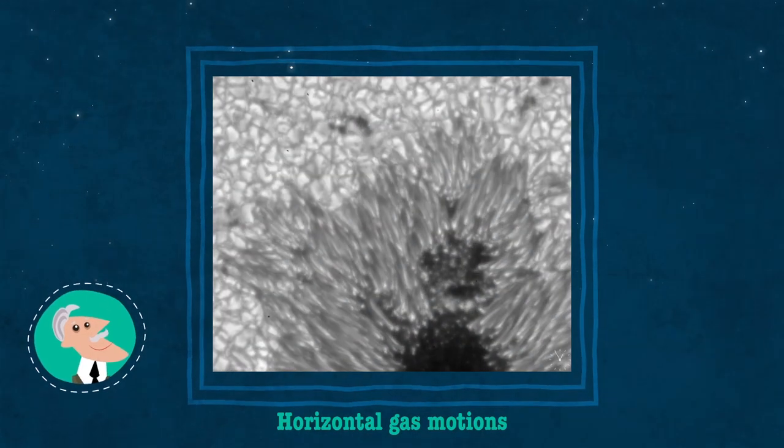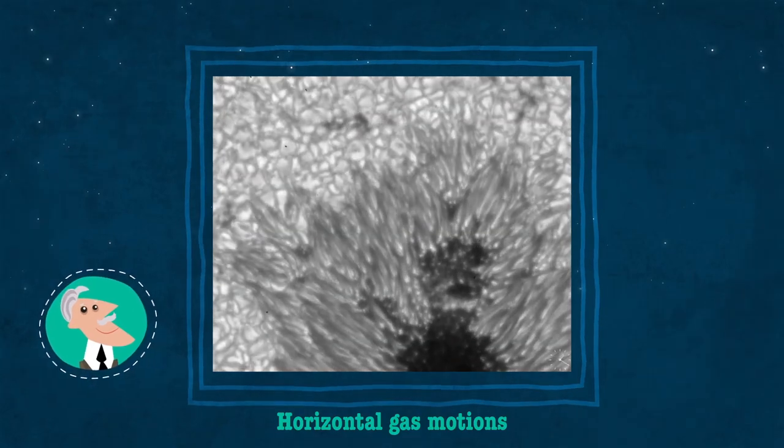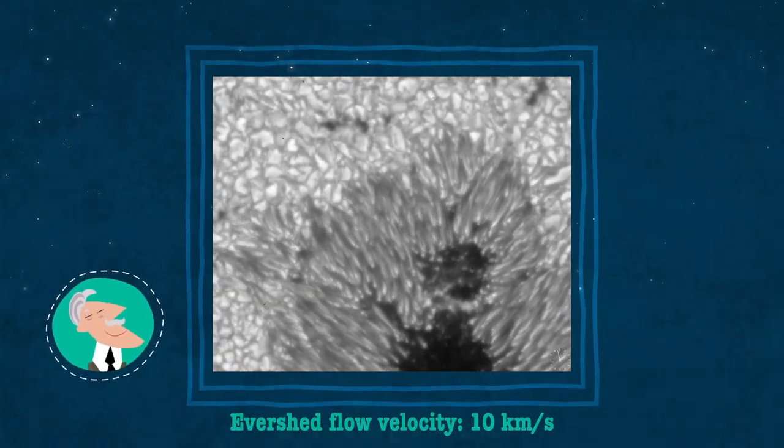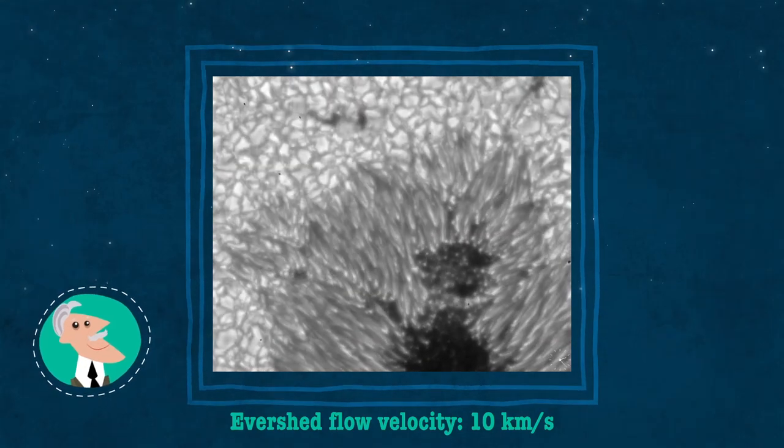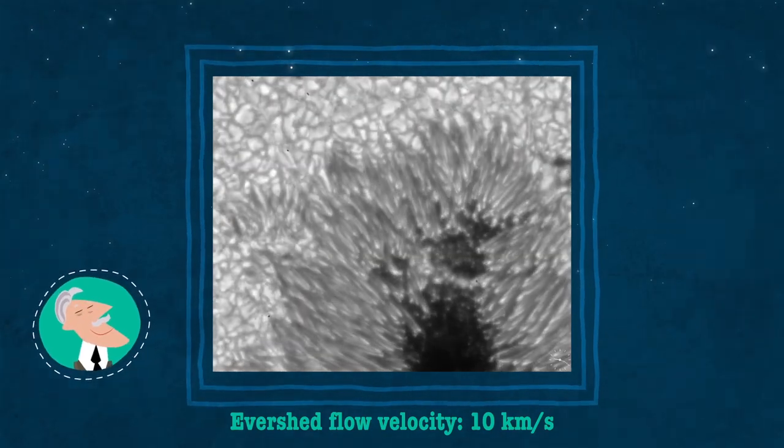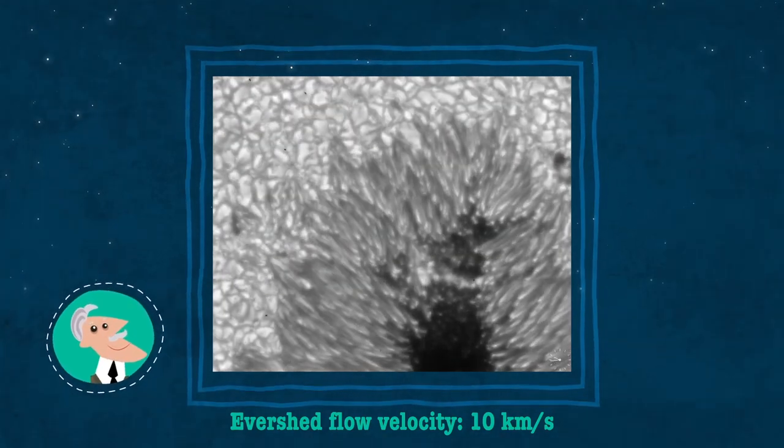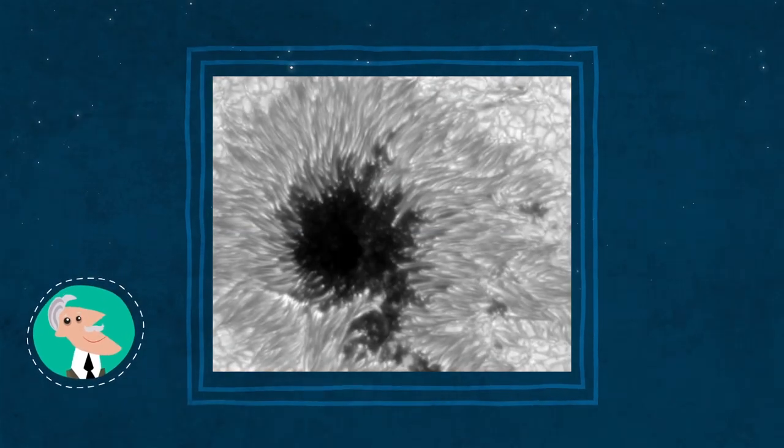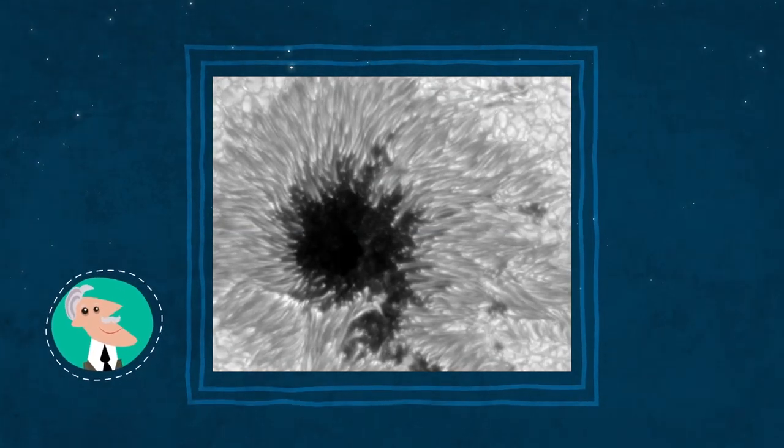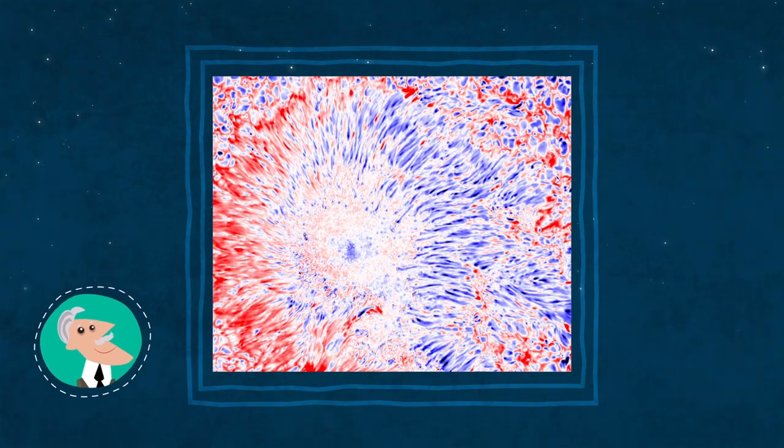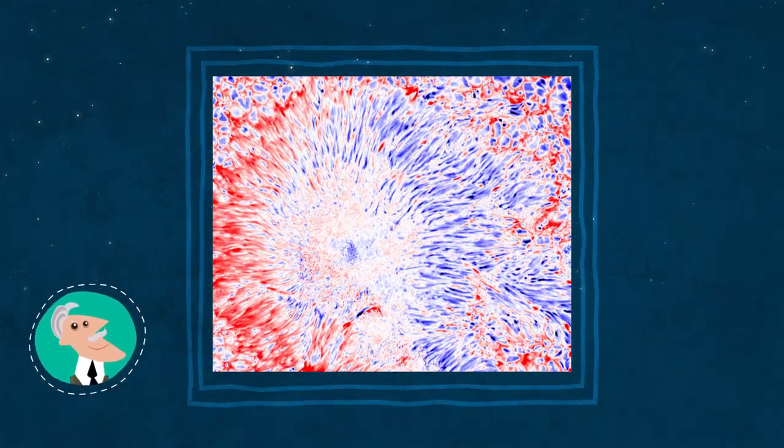These motions are horizontal and follow the filaments that make up the penumbra. Sometimes it gets supersonic, reaching speeds of 10 km per second or more. But there are still many open questions. Why do they occur? How are they related to the penumbral magnetic field? Where does the gas go?